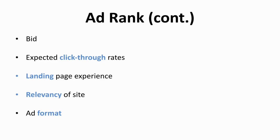Google analyzes the relevancy of a site by reading the language on your site, showing how important it is to choose a good keyword. Ad format is how you present your information to the users, such as the phone numbers, site links, website's domain, and other headlines. These are all the factors Google will look at under the ad format category.